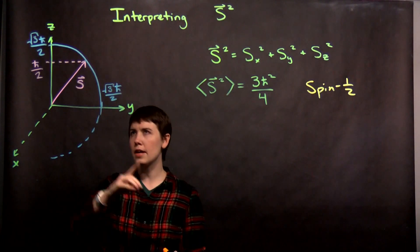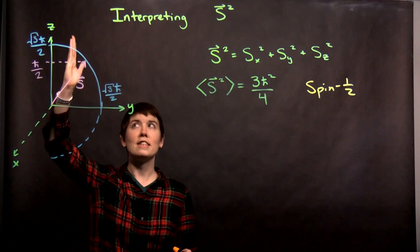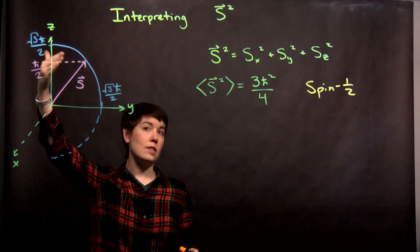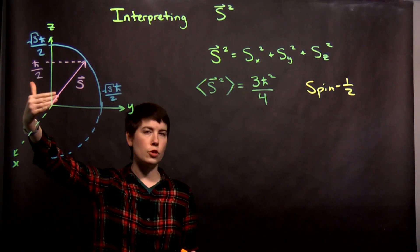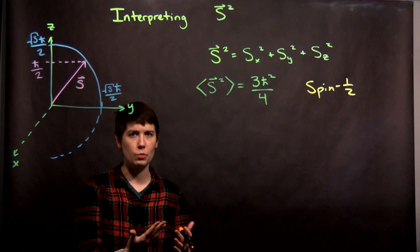So we're actually saying here that the spin vector isn't aligned exactly with the z-axis or else we would be getting square root of 3ℏ over 2. So one interpretation of this is kind of going towards the uncertainty principle.